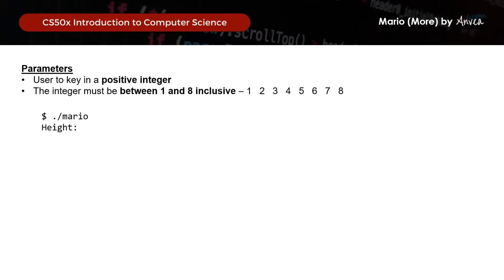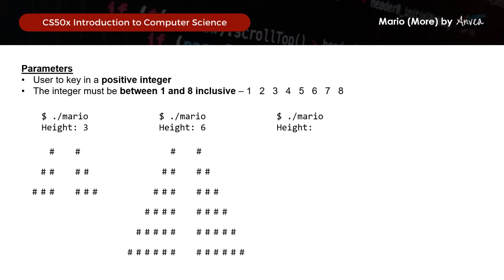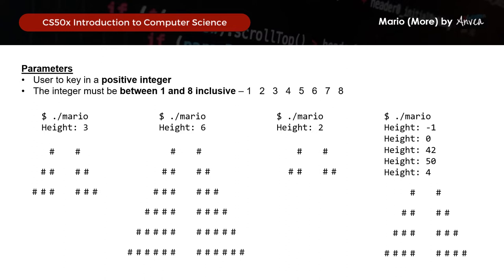So if the user keys in 3, this is the pyramid that should appear. Likewise if the height is 6, and if the height is 2. If the user keys in the wrong input — anything that is not an integer between 1 and 8 inclusive — the system will keep prompting the user for the input until a valid one is received, then it will print the pyramid.